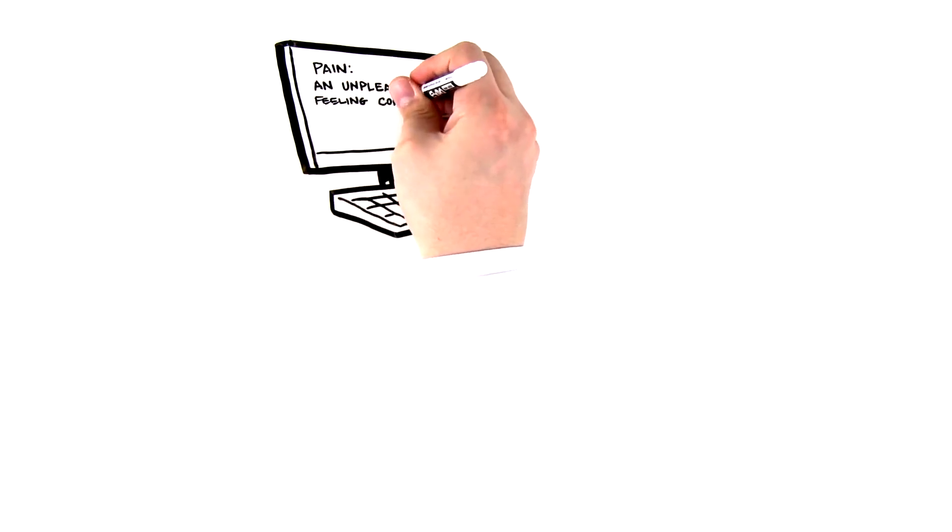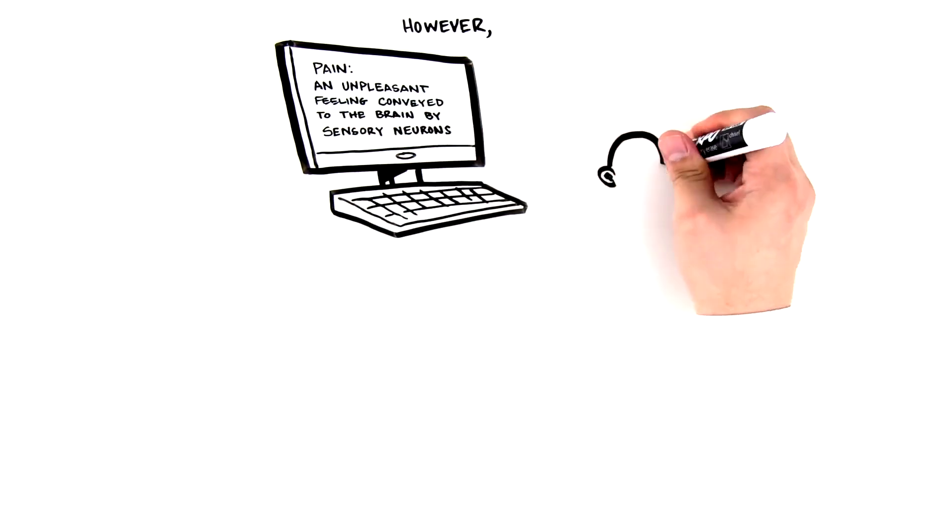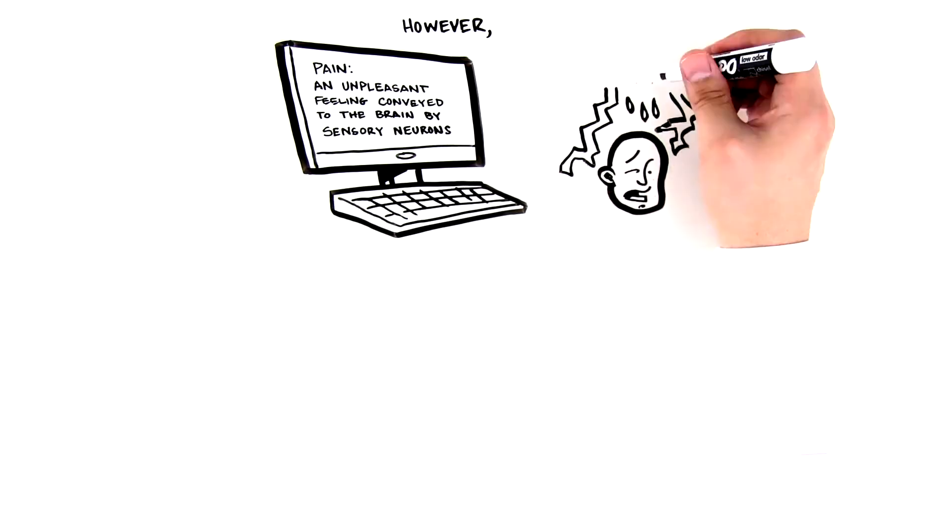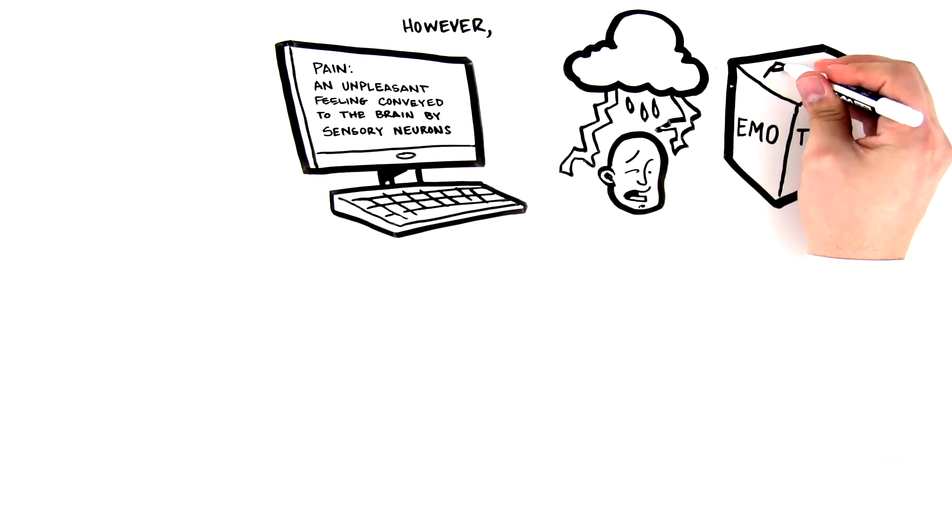Pain, an unpleasant feeling conveyed to the brain by sensory neurons. However, pain is more than a sensation or a physical reaction. It has an emotional component. This emotional response adds a new dimension to how we view pain.